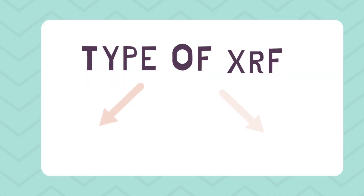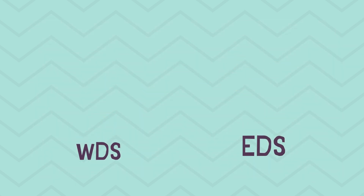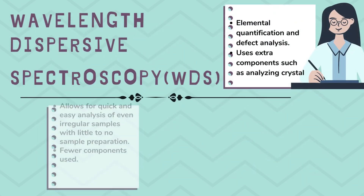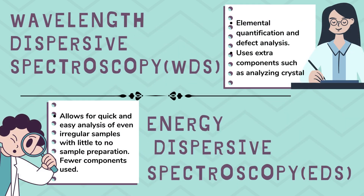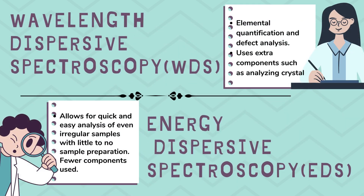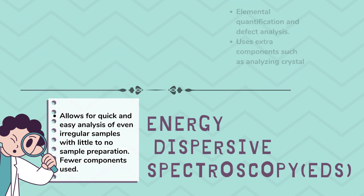There are two main types of XRF instruments. WDS is mainly used for composition and defect analysis, and has extra components such as an analyzing crystal. EDS is used for quick and easy analysis and has a simple setup because it has few components only.